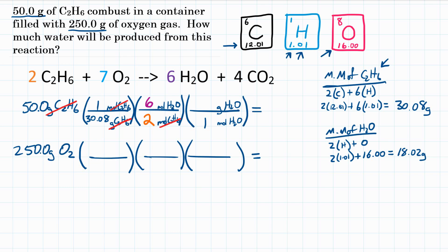So two times 1.01 plus 16 is 18.02 grams. That's the molar mass of water. So that goes up top, 18.02 on our third conversion factor. And moles of H2O will now cancel out. And we will be left with grams of H2O.